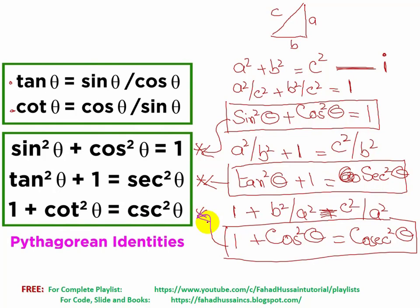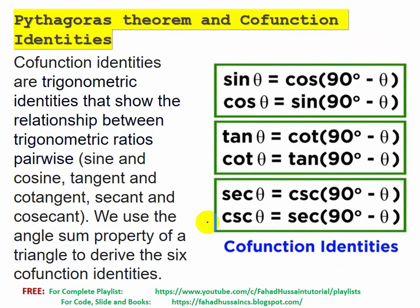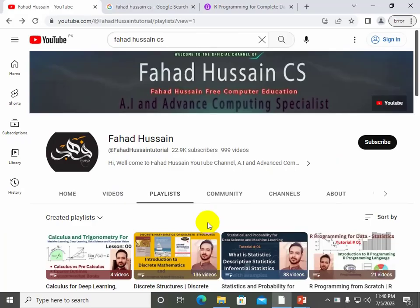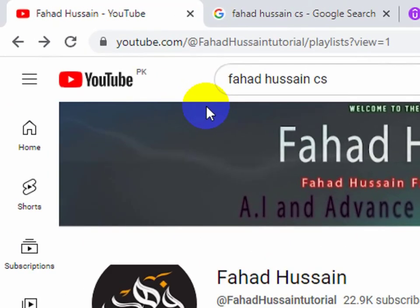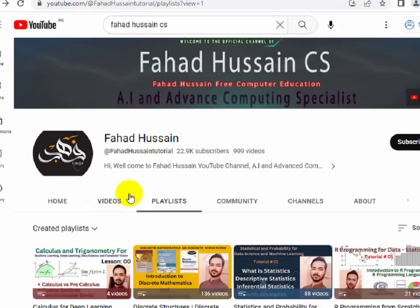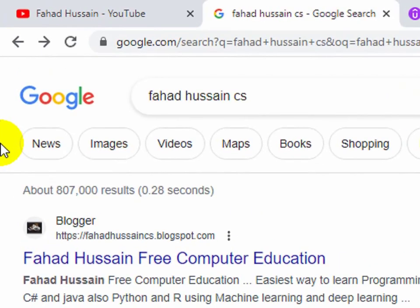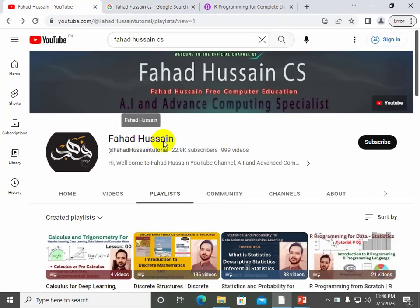These are the three Pythagorean identities which we have proved, and these are used in trigonometry for multiple solutions to prove your sides or answer your questions. That is all about the Pythagorean theorem and Pythagorean identities. In the next session, we will discuss co-function identities. All previous videos we have covered are available on our YouTube channel.